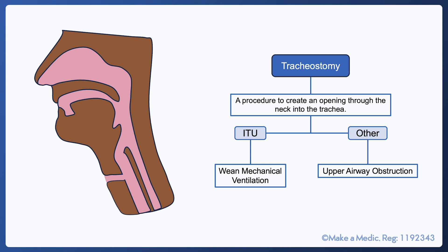In ITU, patients who have been dependent on a ventilator for a prolonged period of time may require slow weaning as their lungs and respiratory muscles recover. Tracheostomies are far less stimulating for the airway than endotracheal tubes, meaning that patients can continue to receive ventilatory support via the tracheostomy tube whilst being able to lessen sedation.